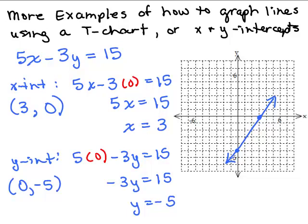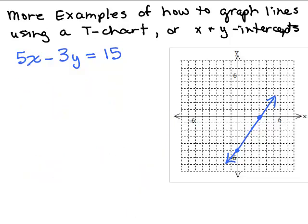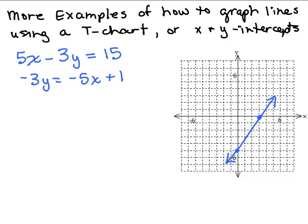So we use the X and Y intercept method. Let's do this same problem using a T-chart. I'm going to go ahead and leave the graph we got by using the X and Y intercept method. And to use the T-chart, let's solve for Y. So we have negative 3Y equals negative 5X plus 15. Divide both sides by negative 3, and we have Y equals 5 thirds X minus 5.